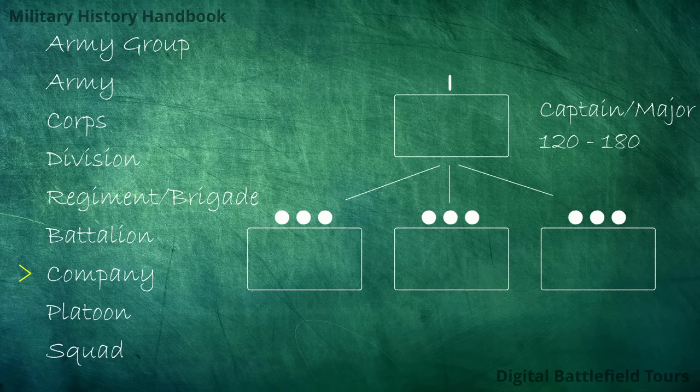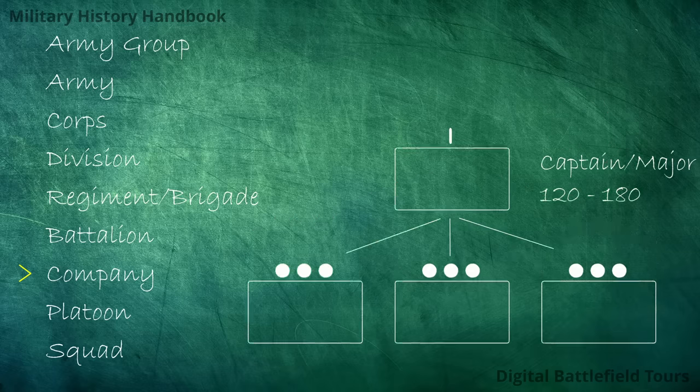In the artillery arm, the equivalent of a company would be a battery, usually consisting of four guns.